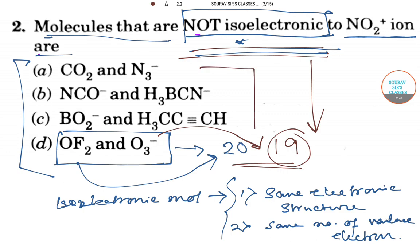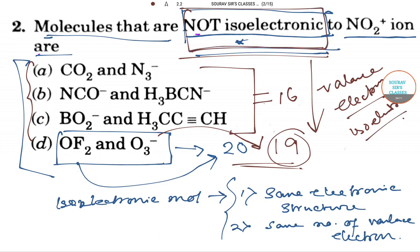So these have different valences and we can say these are not isoelectronic molecules. The other options all have 16 valence electrons, so they must be isoelectronic molecules. Here we asked which is NOT isoelectronic to NO2+, so the answer will be option D.